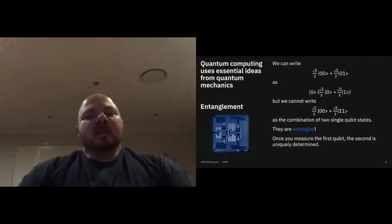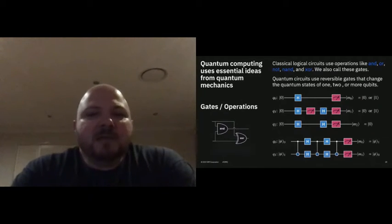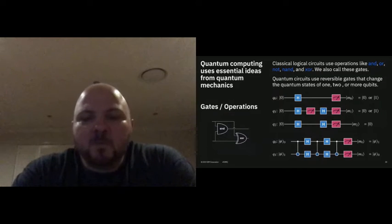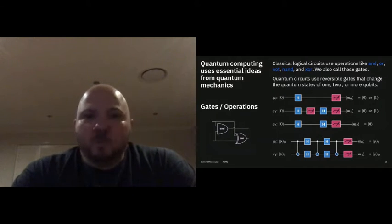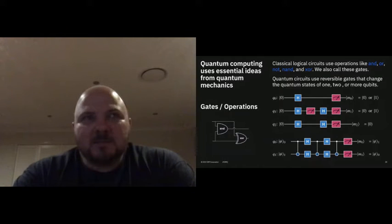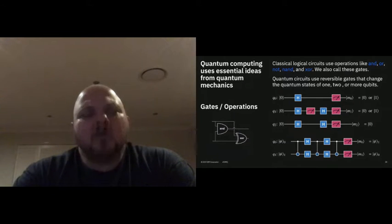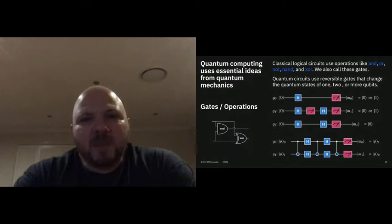Just as in classical computers you have gates — AND, NAND, XOR, all those sorts of things — in quantum computing you also have gates. You won't find any of the same gates that you find in a classical computer. But a key part of a quantum gate is that it's reversible.